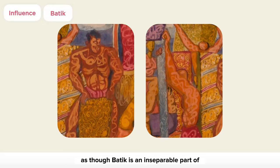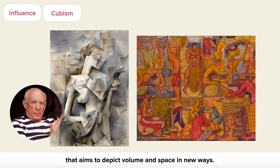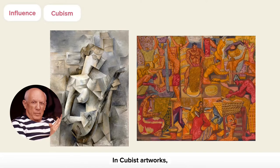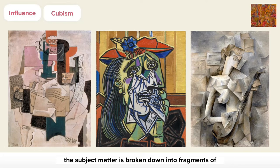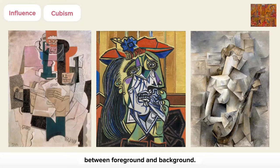As though batik is an inseparable part of their identity. Another key influence is cubism, a Western geometric art movement founded by Spanish artist Picasso, that aims to depict volume and space in new ways. In cubist artworks, the subject matter is broken down into fragments of planes and cubes, presented in multiple perspectives. Some parts are flattened with no sense of depth, creating no distinction between foreground and background. Cubism also ignores naturalistic colors and proportions.